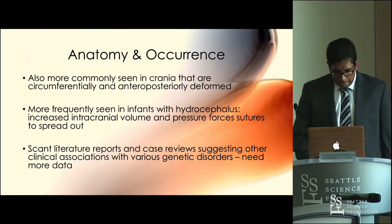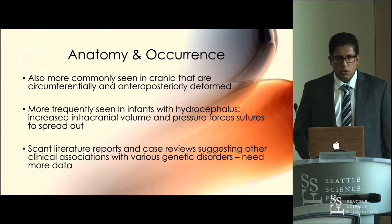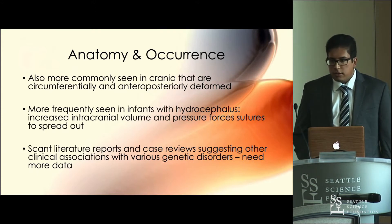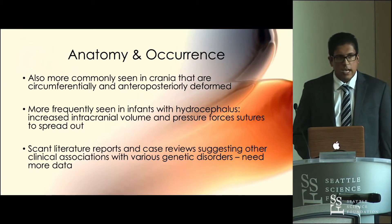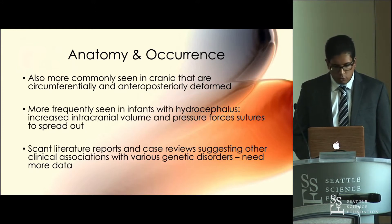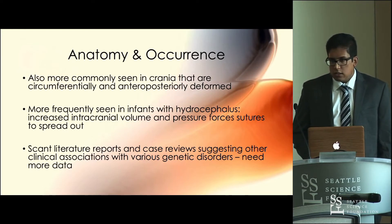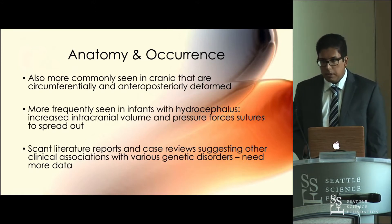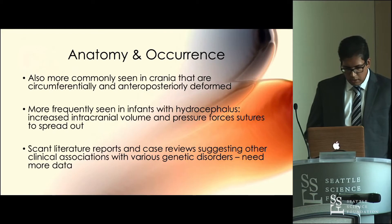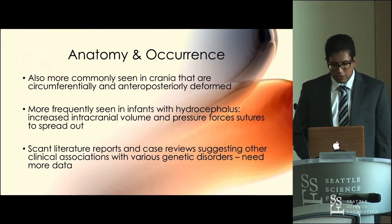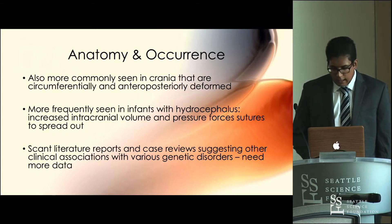Wormian bones are also more commonly seen in crania that are circumferentially and anterior-posteriorly deformed, such as from a difficult vaginal delivery or from intentional skull manipulation practiced in some cultural traditions. They're also more commonly seen in infants with hydrocephalus, where increased intracranial pressure pushes out on the developing bony sutures, causing the formation of wormian bones. To summarize, there's scant literature on their occurrence and clinical associations, and there's definitely a need for more data to verify these hypotheses.